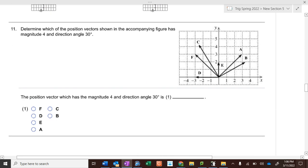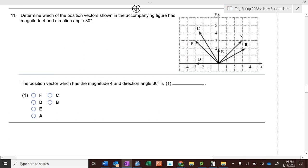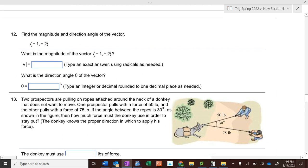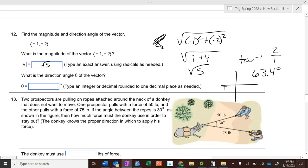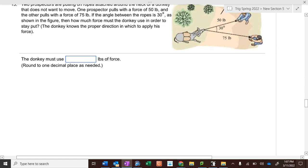Magnitude of the vector: you take the square root of negative 1 squared plus negative 2 squared, which is 1 plus 4, or the square root of 5. And then you take the inverse tangent of 2 over 1. 63.4 degrees, but we're in quadrant 3, so it's 63.4 degrees down from 180, so it's 243.4 is our angle.